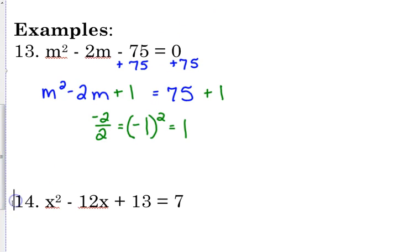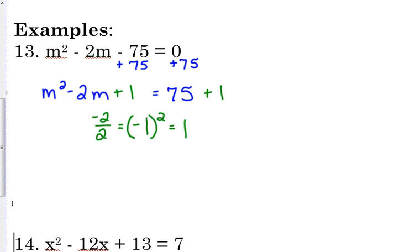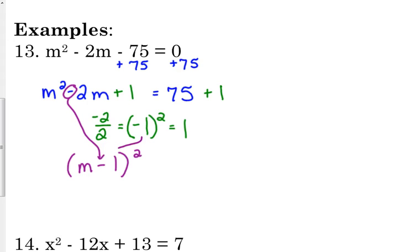So technically we haven't changed anything. If I turn right around and I subtract 1 from both sides, I'm right back to where I started. We haven't actually changed our equation. We're just manipulating it so that now we have a perfect square trinomial on the left side. Before, M squared minus 2M minus 75 is not factorable, but now we have something that is factorable on the left side. So that is step 4. We need to factor the perfect square trinomial. So that left side is M minus 1 squared. Because this was a negative and because we squared 1, that factors into M minus 1 squared. And on the right side, 75 plus 1 is 76.